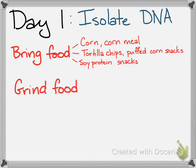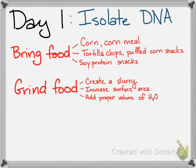The next step is to grind the food up. We need to make those cells and the DNA inside them available to the chemicals we're going to add. You're going to grind them up in a mortar and pestle — a very common grinding device; if you grind spices at home, you might have one. The big thing about grinding the food is to add the proper volume of water at the right time so that you get a slurry and food that's very finely ground up. So you'd be working out your frustration on that food — it's kind of fun.